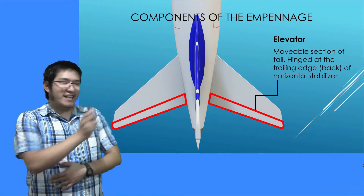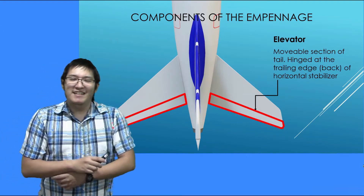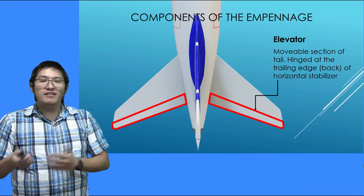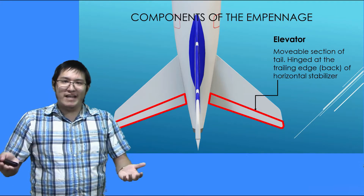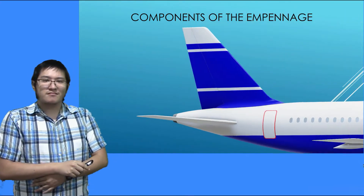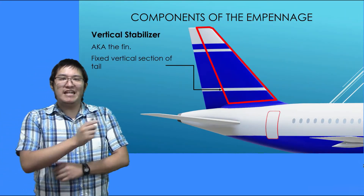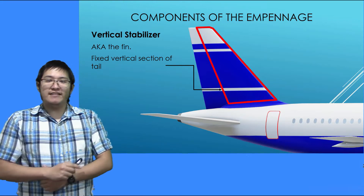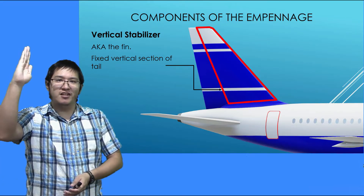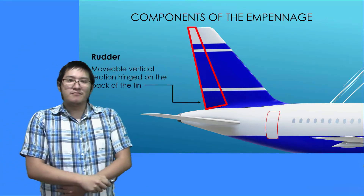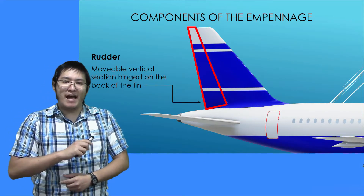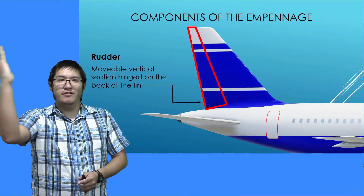Next up is the elevator. The elevator is the movable section of the tail. It is hinged at the trailing edge, or the back, of the horizontal stabilizer — so it's the part of the horizontal stabilizer that moves. Next up we have the vertical stabilizer, also known as the fin. This is the fixed vertical section of the tail — it does not move. And then we have the rudder. This is the movable vertical section, hinged at the back of the fin.